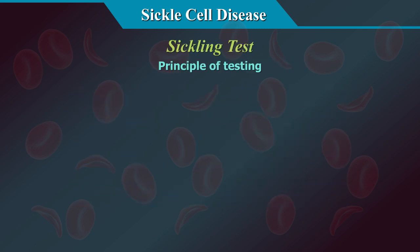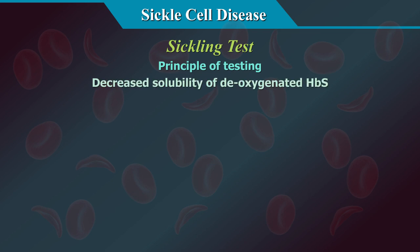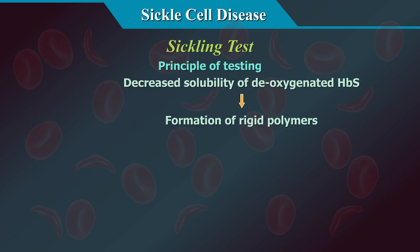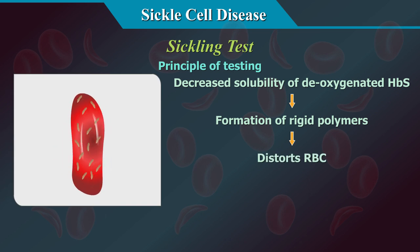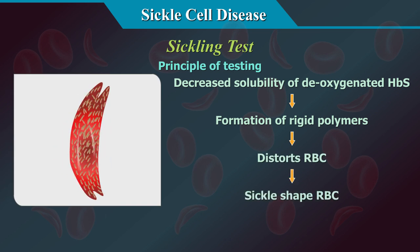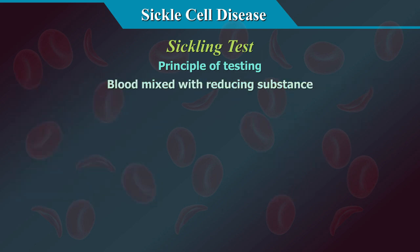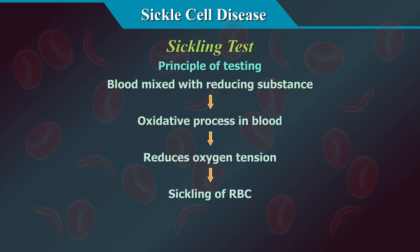Principle of the sickling test: the decreased solubility of deoxygenated hemoglobin S results in the formation of rigid polymers which distort red cells to the characteristic sickle shape. Classically, these red cells appear as a thin crescent with two pointed ends and lack central pallor. Blood is mixed with a reducing substance, which reduces oxygen tension, inducing the sickling process of HbS in these RBCs.